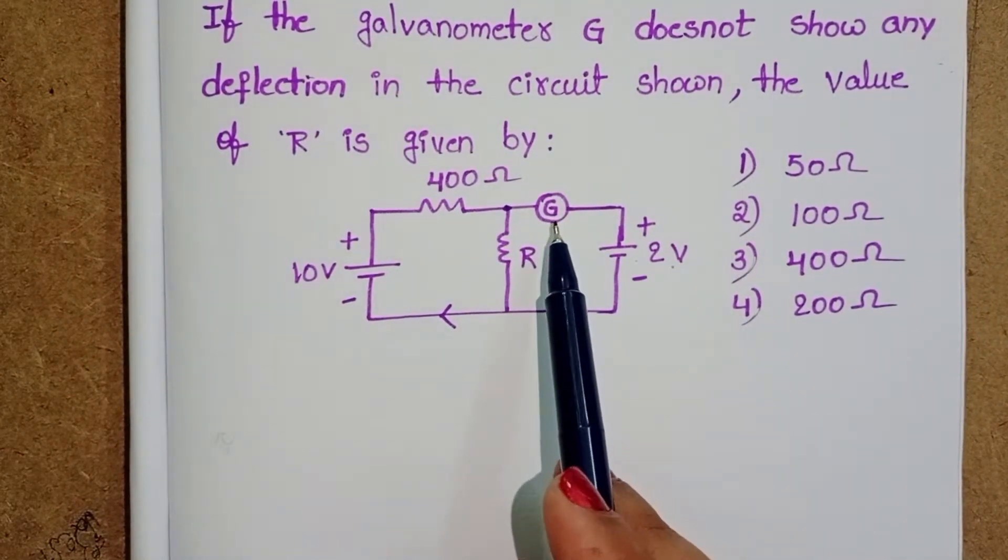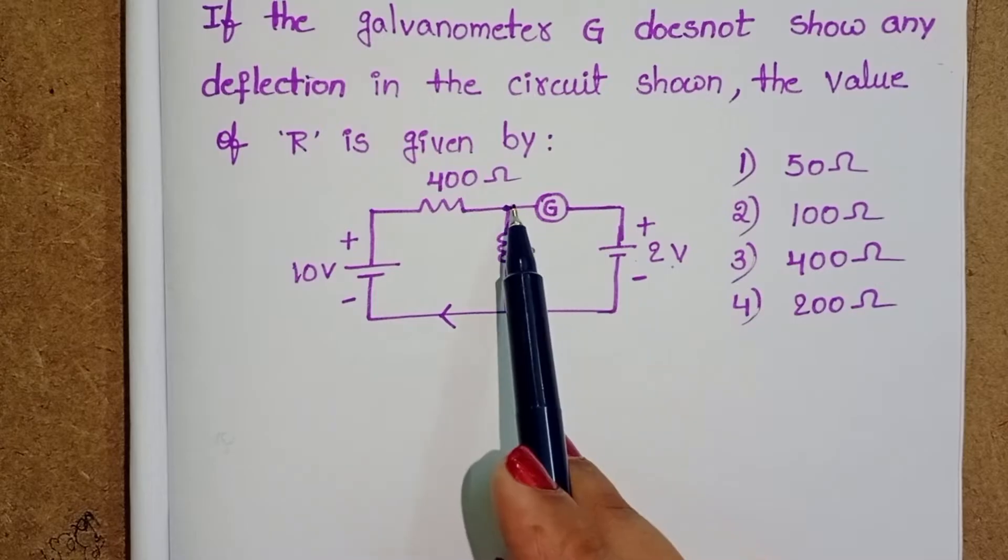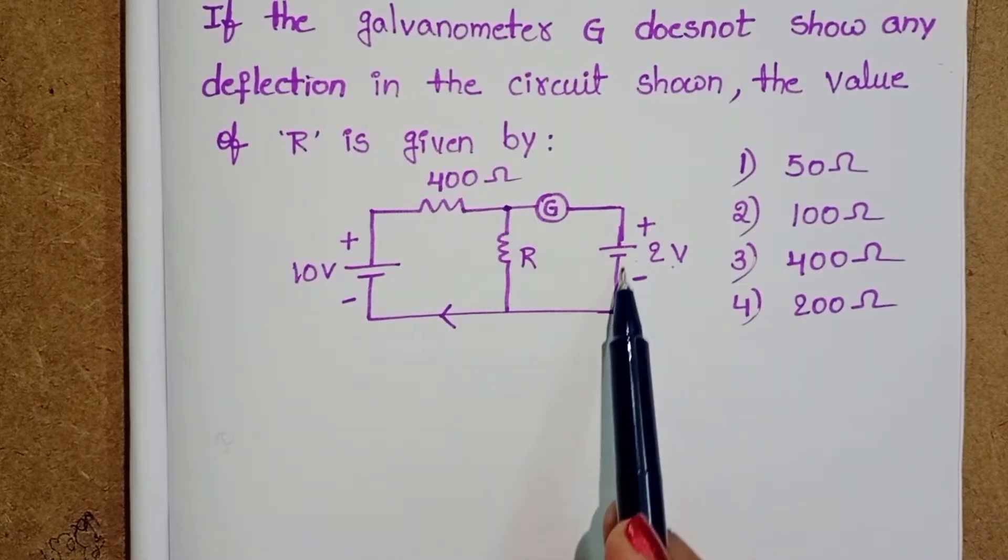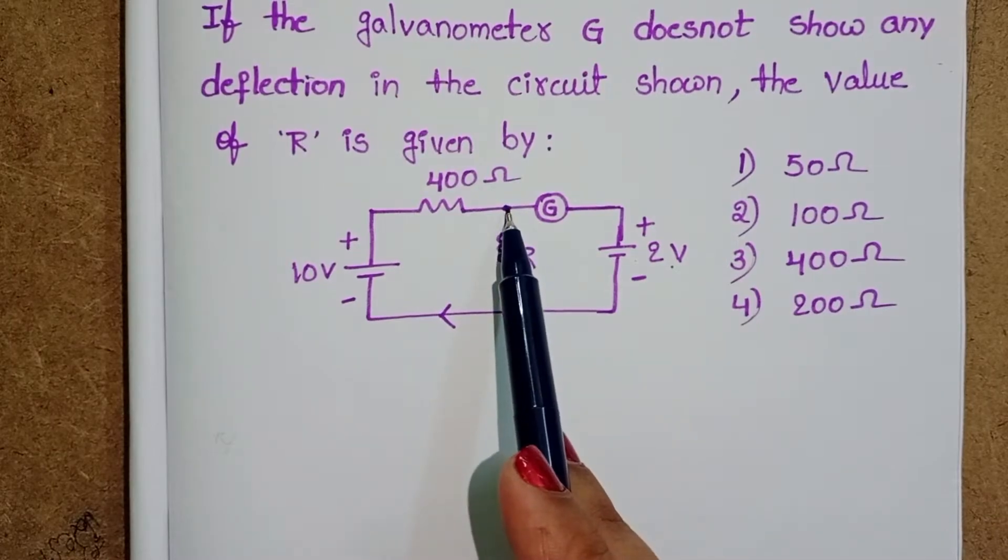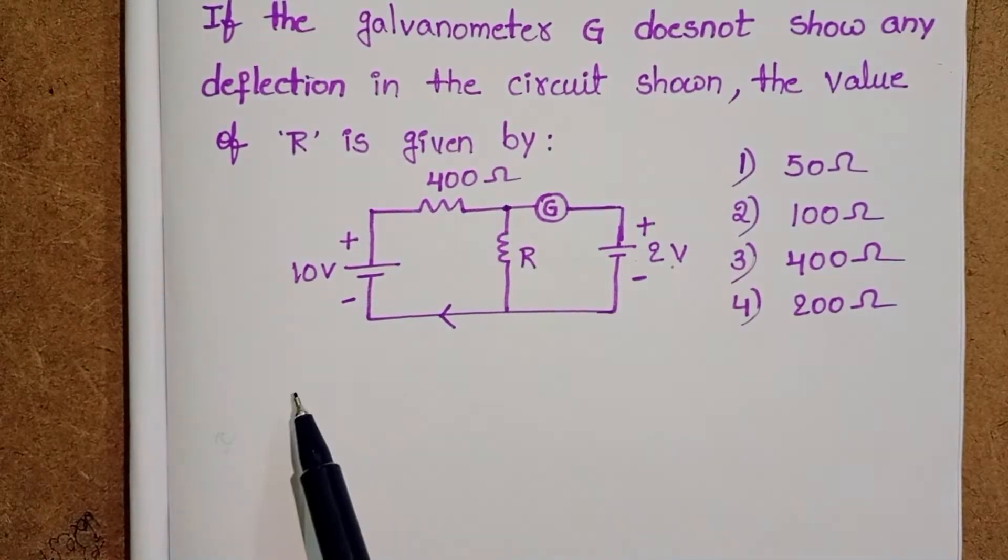But galvanometer does not show any deflection means there is no current along this path. The total current entering into the junction point passing through the resistor.